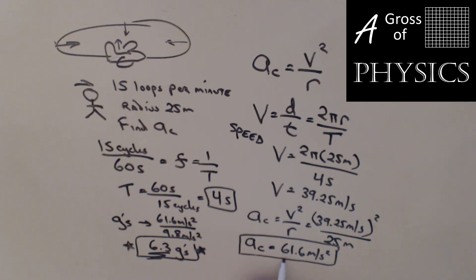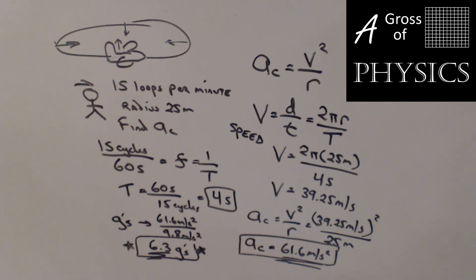The centripetal acceleration of the RC plane is 61.6 meters per second squared — that's the answer to our problem. We can also convert it to g's: 6.3 g's, which is just how many times bigger than 9.8 m/s² this acceleration is.